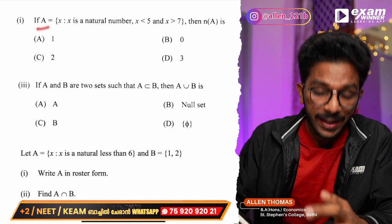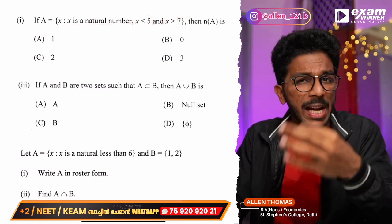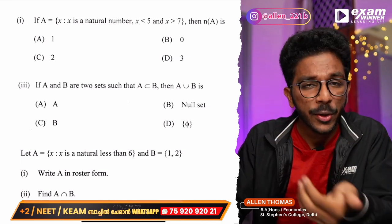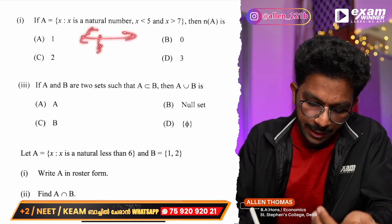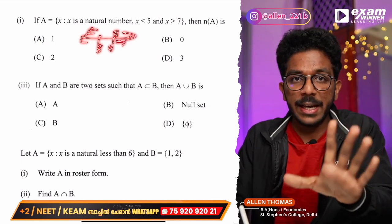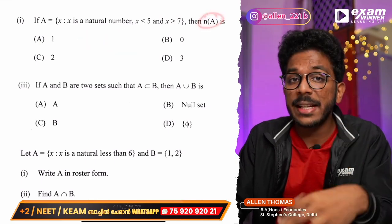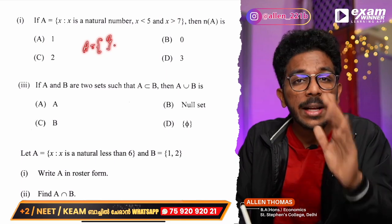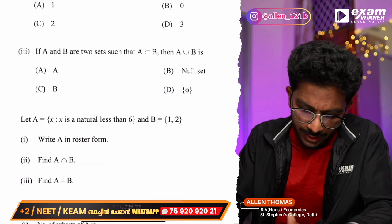If A = {X : X is a natural number, X less than 5 and greater than 7}, since no natural number can be both less than 5 and greater than 7, that number does not exist. So 5 and greater than 8 — you have to show the number line. Number of elements in A is zero.